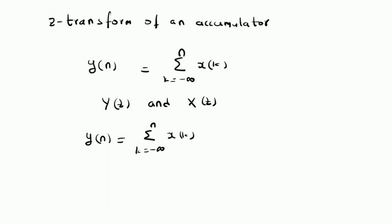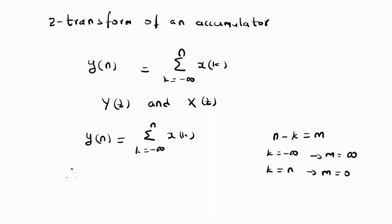Now, we change the variable. The next step is to change the variable k. We redefine a new variable n minus k as m. So, for k equal to minus infinity, m becomes plus infinity, and for k equal to n, m is equal to 0. Therefore, y of n can be rewritten as summation m equal to 0 to infinity x of n minus m. So, that is the definition of the accumulator — summation m equal to 0 to infinity x of n minus m.